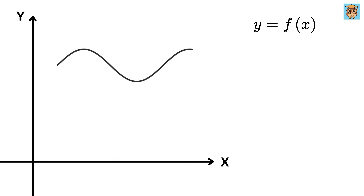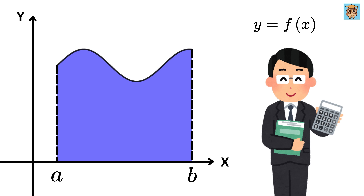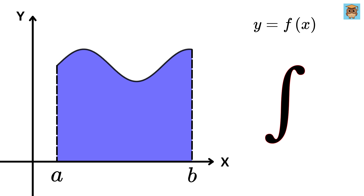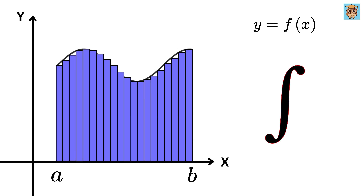Now let's say we want to find the area of this blue shaded region, which is the space under this curve between two points on the x-axis, like from x equals a to x equals b. We can't just measure it directly because the curve is not a straight line. So we use integration, where we break this shaded region into infinitesimal vertical slices, then add up their areas to get the total area.